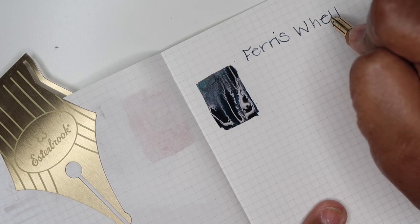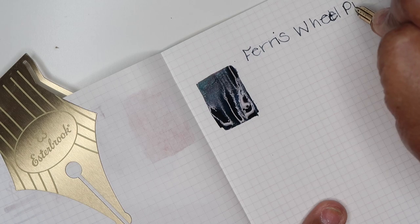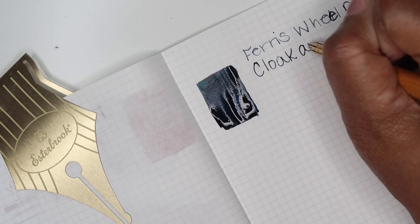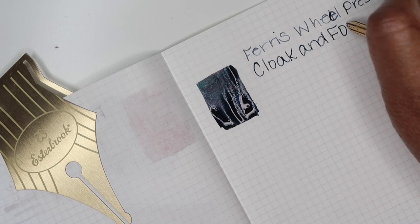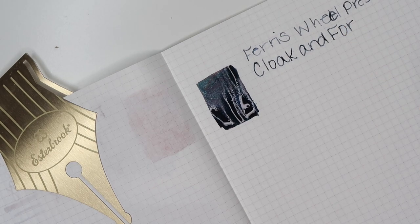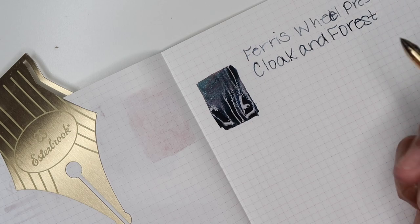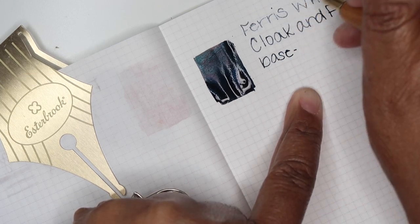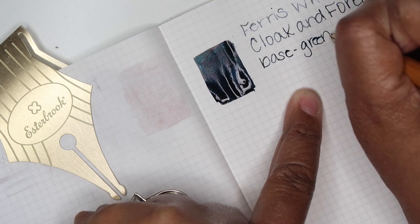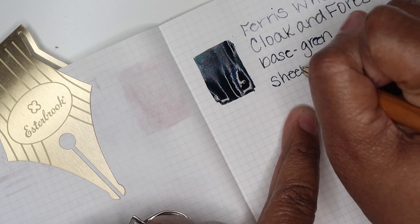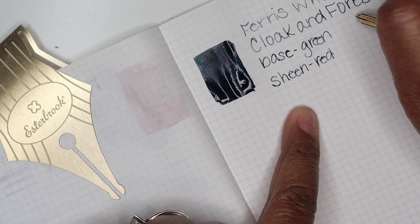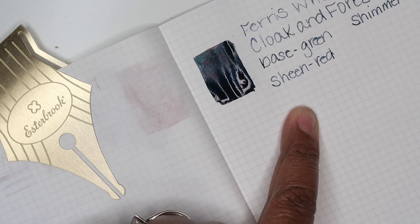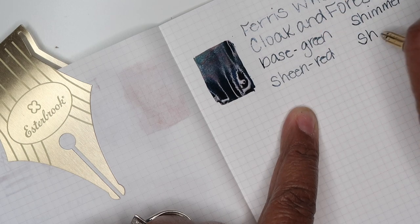I can't spell. Cloak and forest. Let's see. And then let's see. I'm just going to write base green, sheen red, shimmer silver, and the shading is high or low. Sorry.